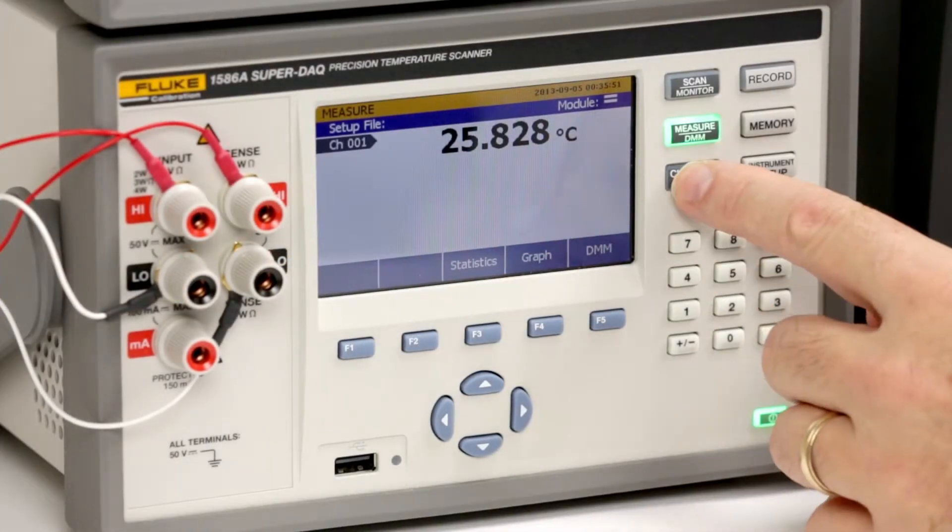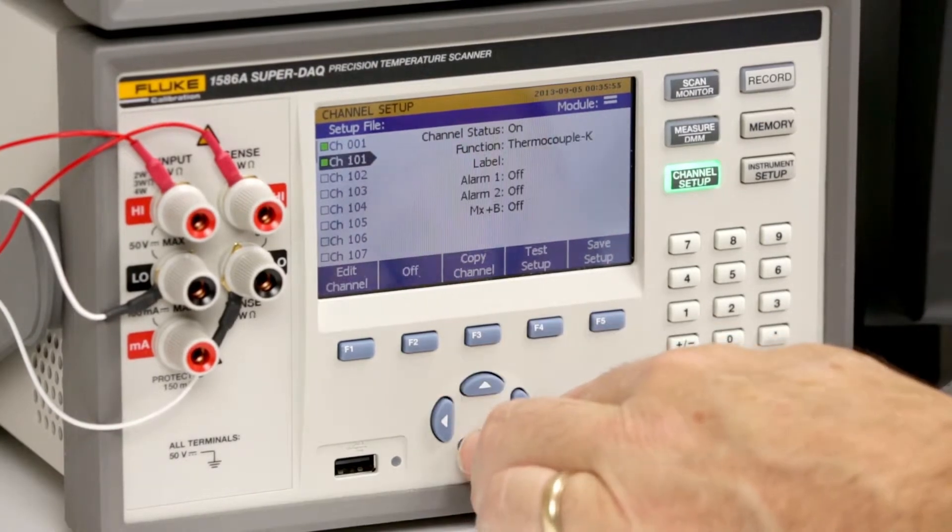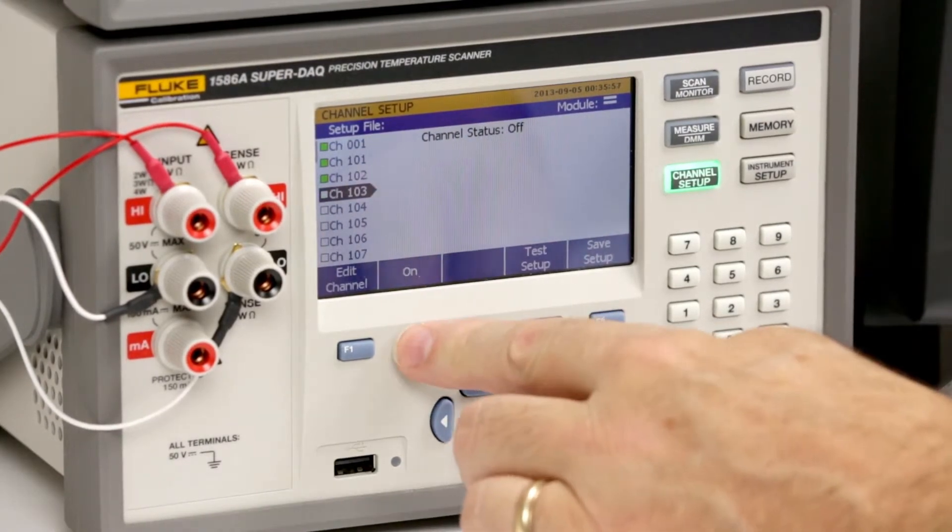Now press the channel setup key. Select the channels to be included in the test and turn them on. We'll select channels 101 through 104.